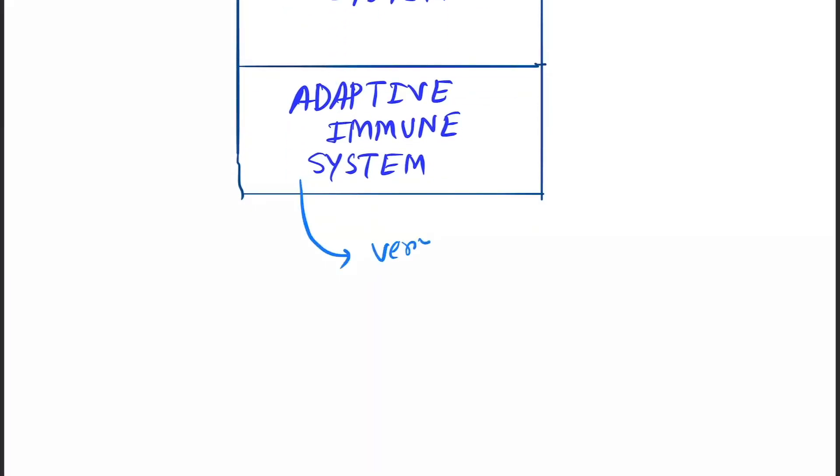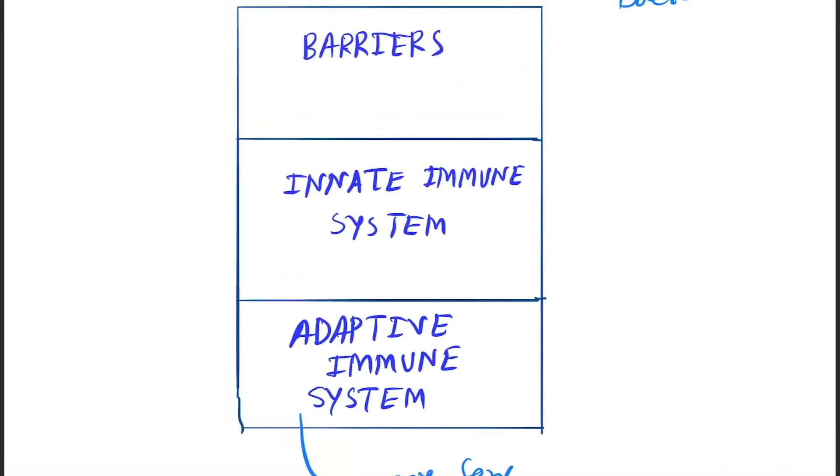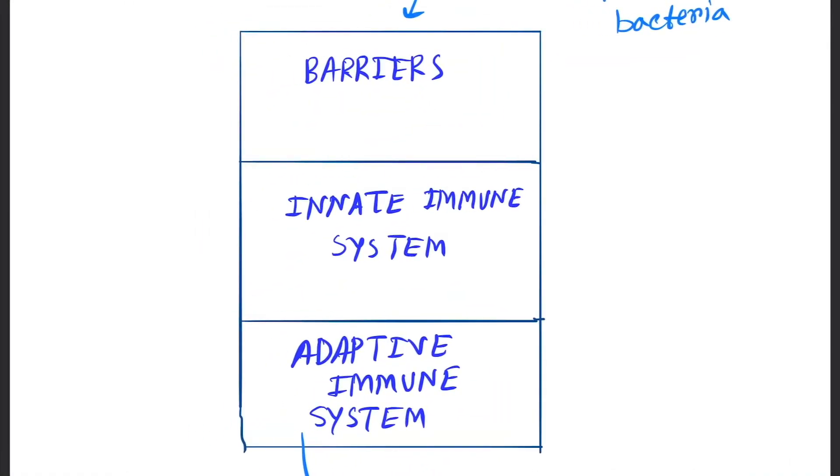So here three systems working as layers of different layers of a filter. So by this our body produces immune system and they kill the bacteria. So that is the basic concept for immunology.